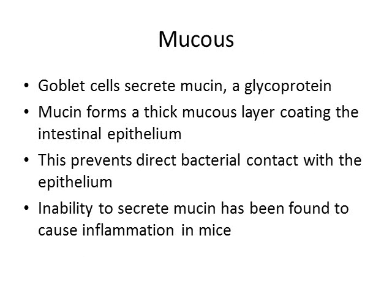Mucus deserves a special discussion. Mucus mainly consists of mucin, a glycoprotein secreted by goblet cells, forming a thick mucus layer that coats the intestinal epithelium. In mouse experiments, when genes were knocked out to prevent mucin secretion, the mice almost always developed inflammatory bowel disorders due to the lack of mucus and the constant bacterial contact and stimulation of inflammation at the epithelium.